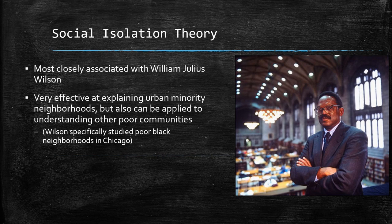Social isolation theory is most closely associated with a sociologist named William Julius Wilson. It is incredibly effective at explaining how urban minority neighborhoods can fall into this cycle of extreme reproducing poverty.